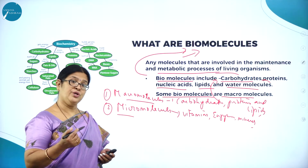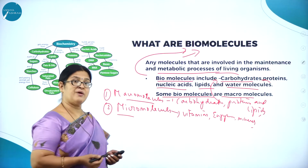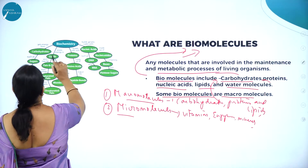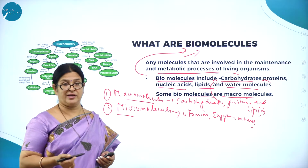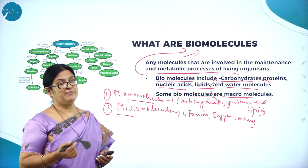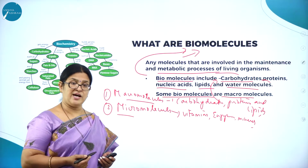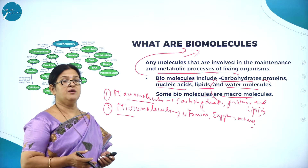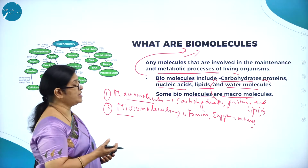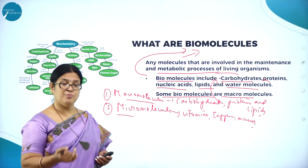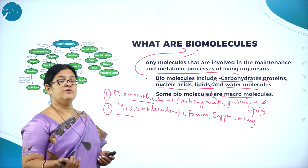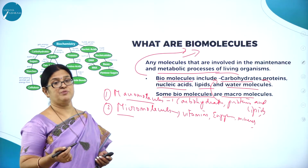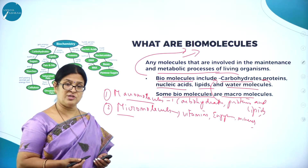Our body is like a chemical factory. In the morning you have breakfast, but by afternoon you feel hungry — the food has been broken down through a series of chemical reactions. The food we eat, whether carbohydrate, protein, or lipid, helps synthesize enzymes and nutrients which are very important for various physiological processes.